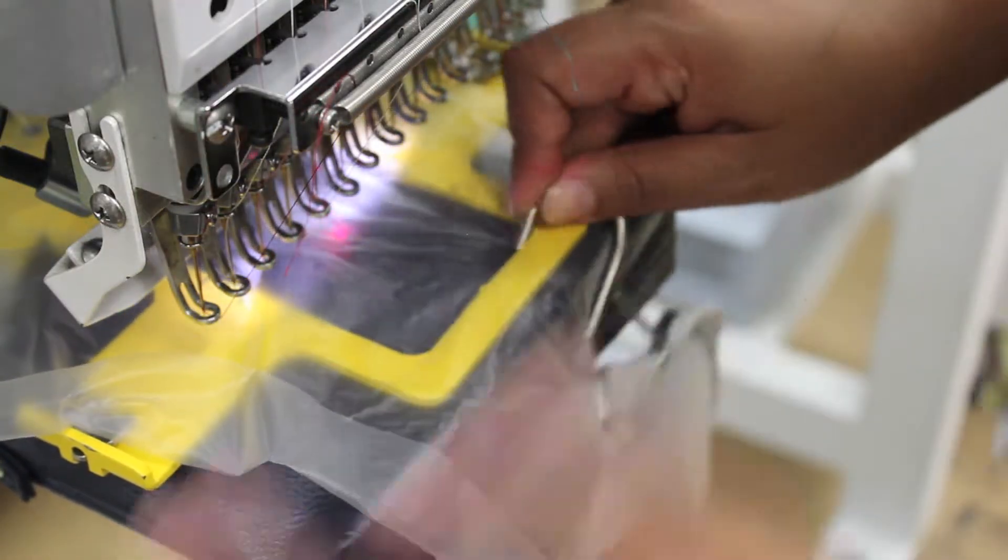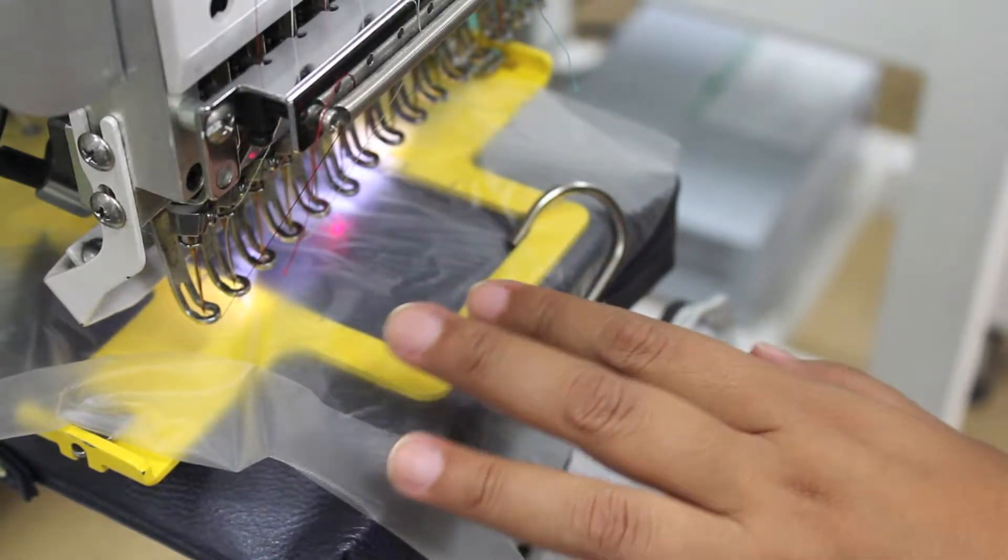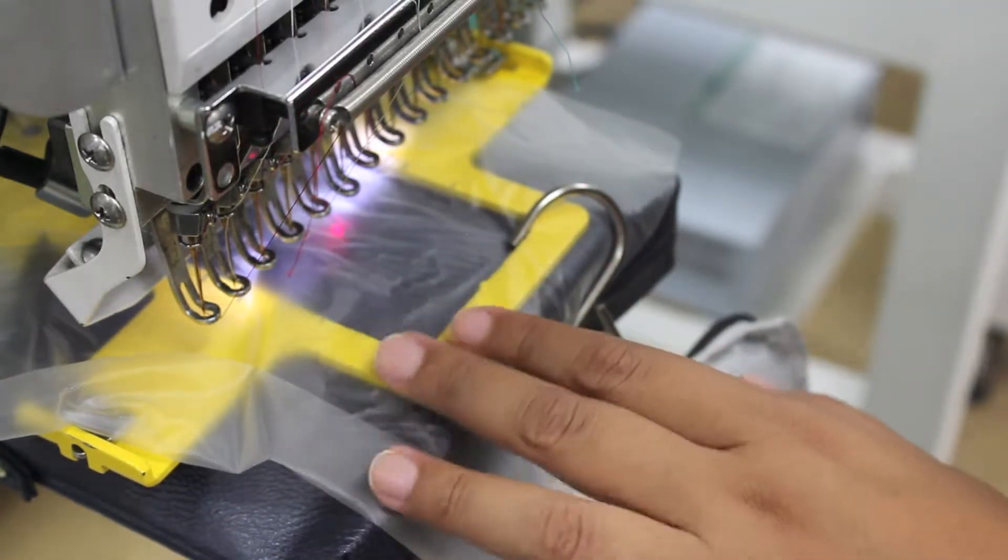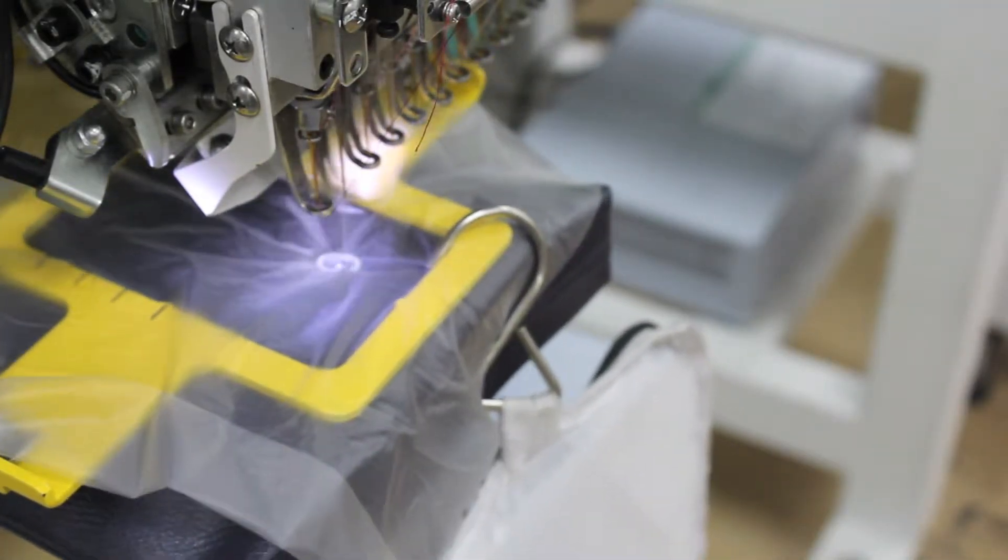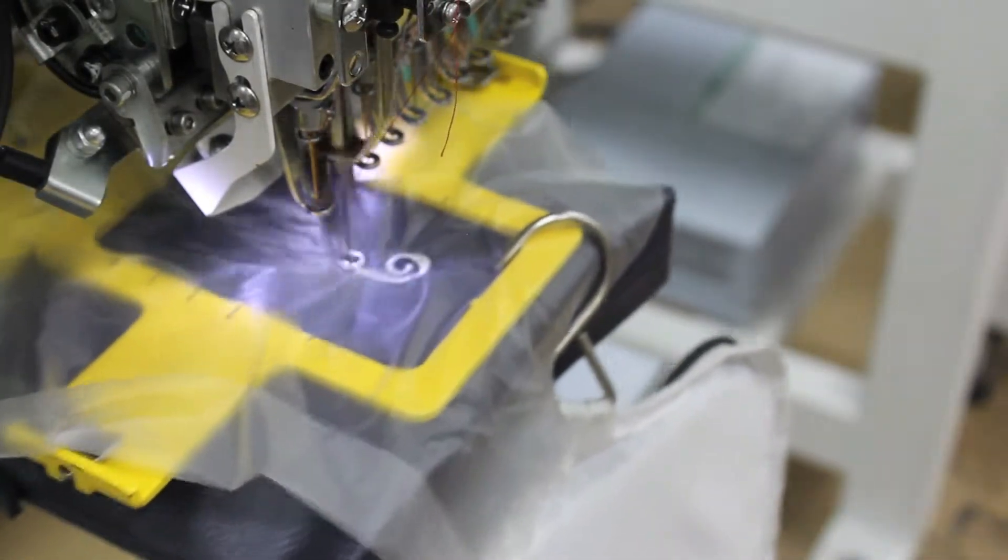This water-soluble disappearing ink keeps your marks visible only when you need to see them. When you no longer need the marks, just wipe them off with plain water. Forget to wipe it? No worries. It will disappear on its own in 72 hours.